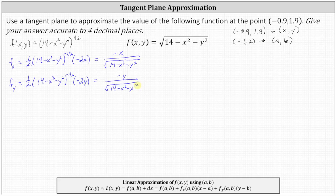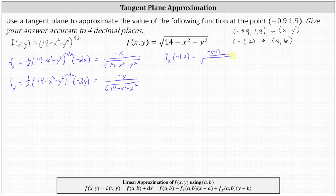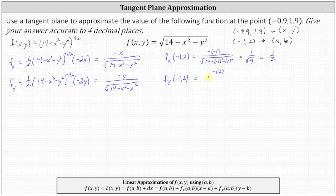Now we evaluate these first-order partials at the convenient point (-1, 2). The partial of f with respect to x at (-1, 2) equals negative of (-1) divided by the square root of (14 minus 1 minus 4), which equals 1 divided by the square root of 9, giving us one-third. The partial of f with respect to y at (-1, 2) equals negative 2 divided by the square root of 9, which is negative two-thirds.